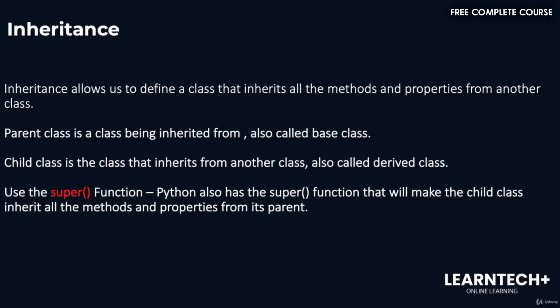Welcome back. In this video we're going to talk about inheritance. Inheritance allows us to define a class that inherits all the methods and properties from another class. A parent class is the class being inherited from, also called a base class. A child class is the class that inherits from another class, also called a derived class. Python also has the super function that will make the child class inherit all the methods and properties from its parent.